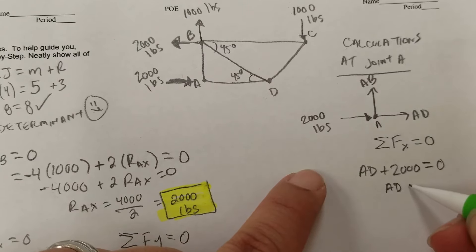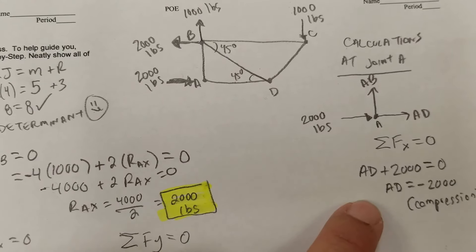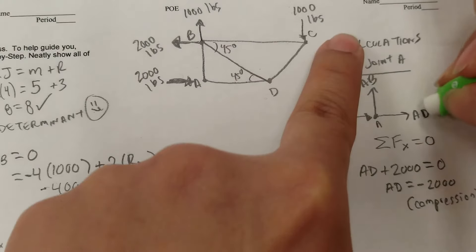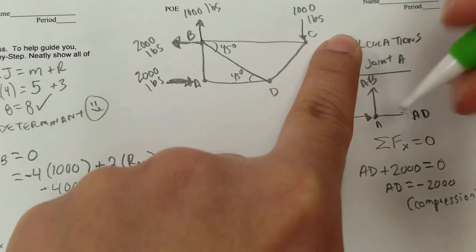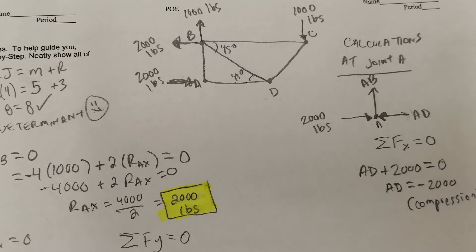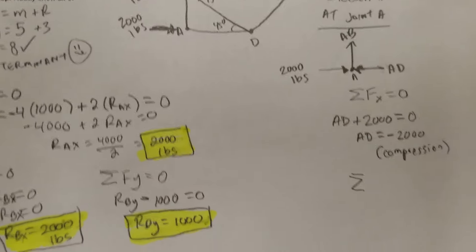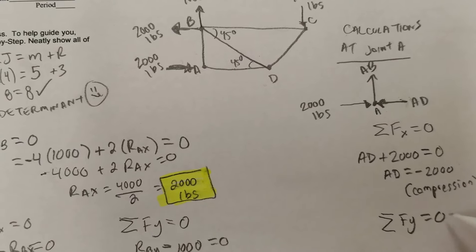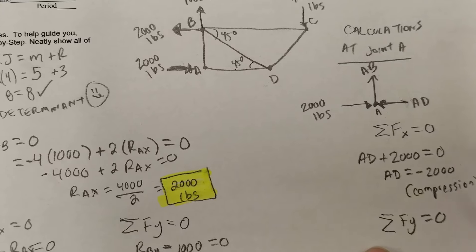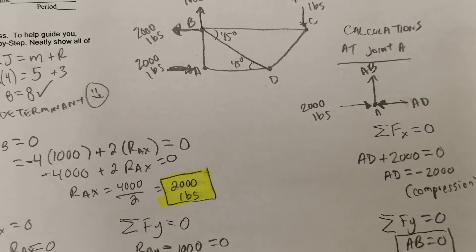Solving gives AD = −2000 pounds, which means member AD is in compression. That means our assumed arrow direction was wrong — in compression, the member vector arrow should point toward the joint, so we fix that on the drawing. AD = 2000 pounds in compression. For the sum of forces in the y-direction, there are no other members or forces in that direction, so AB = 0. No compression, no tension — it's a zero-force member.